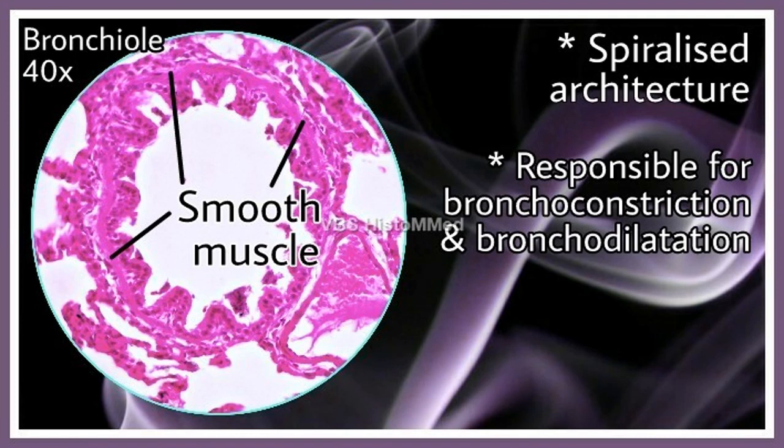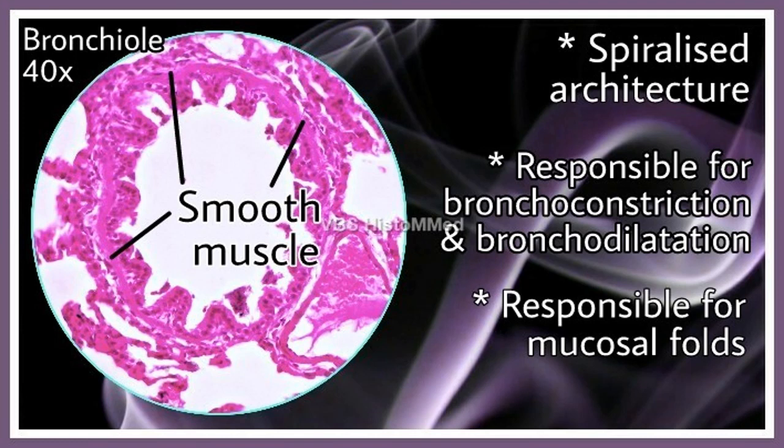The spiralized muscle not only reduces or increases the lumen depending on constriction or dilatation — it also alters the length of the bronchiole because of its spiral nature. Additionally, during bronchoconstriction, the mucosa adjacent to the lumen is thrown into folds. This mucosal folding further adds to the reduction of lumen size beyond what the muscle contraction alone achieves — an important physiological point.